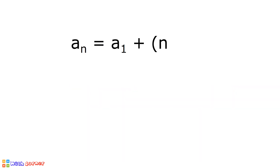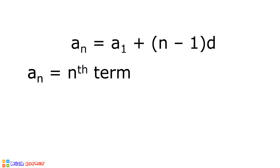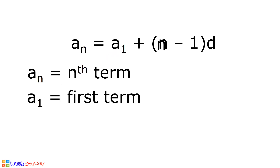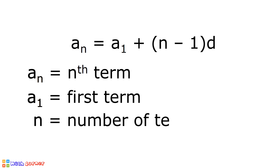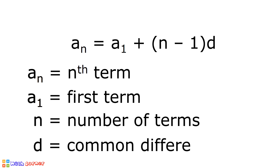The formula for finding the n-th term of an arithmetic sequence is: a sub n is equal to a sub 1 plus quantity n minus 1 times d. In this formula, a sub n is the n-th term, a sub 1 is the first term, n is the number of terms, and d is the common difference of an arithmetic sequence.